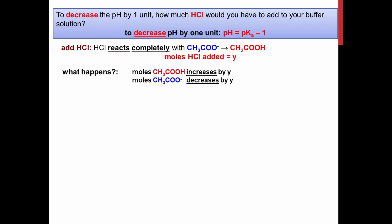In this case, hydrochloric acid reacts with acetate to form acetic acid. We will call the moles of hydrochloric acid Y. As the reaction occurs, the number of moles of acetic acid increase by Y, while the moles of acetate decrease by Y.